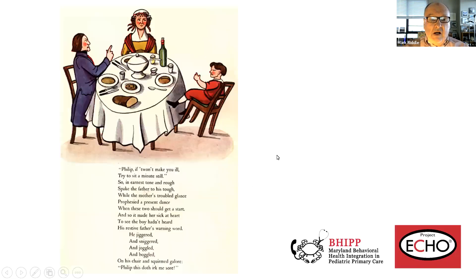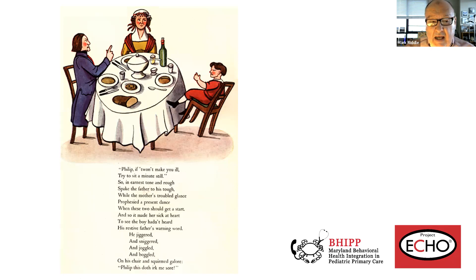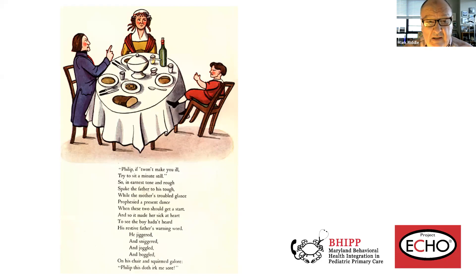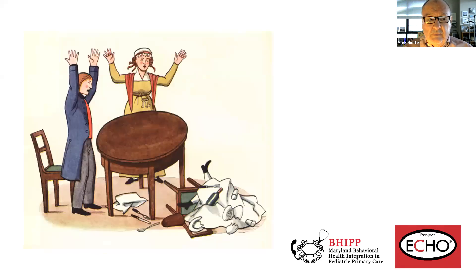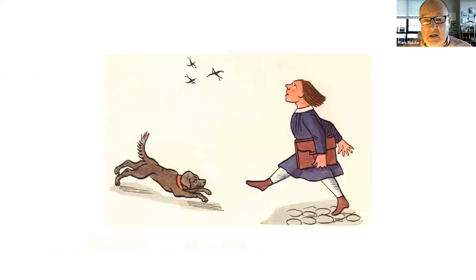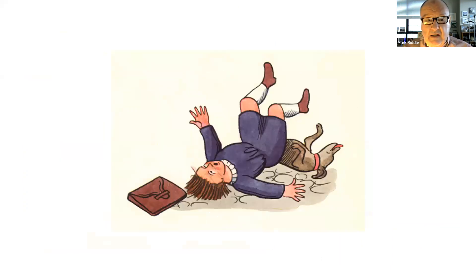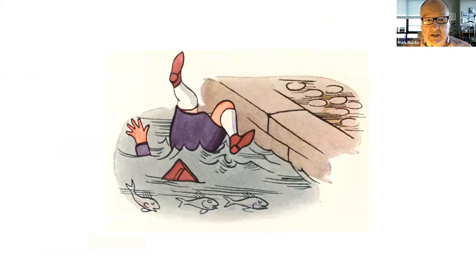Here we have Fidgety Phil. You can see at the bottom there's a poem. It's remarkable to me that Mark Twain could take a German poem and translate it into English so that it still rhymed. And here we have Fidgety Phil with his family at the table. Also, Hans Stare in the Air.